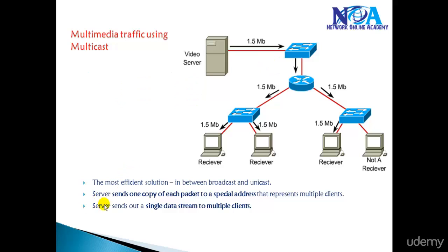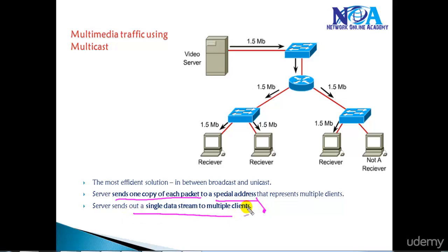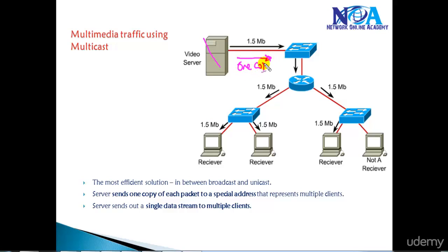The server sends each packet to a special Class D address — we'll discuss this in more detail. The server sends a single data stream to multiple clients. This is a more efficient solution because even if the number of receivers increases, it doesn't add extra overhead on the video server. The packet is replicated based on the number of receivers and sent only to those who want to receive that particular multicast traffic.